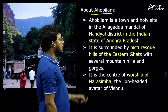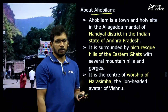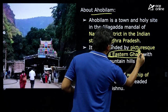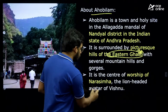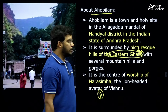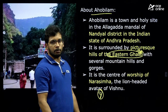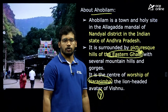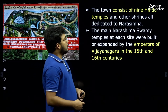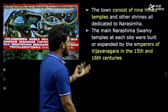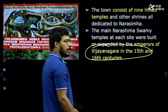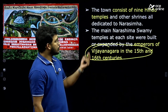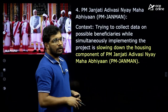Chenchu tribes are also part of Particularly Vulnerable Tribes — their population is declining. Ahobilam is in Nandyal district of Andhra Pradesh, located in the Eastern Ghats. There are nine groups of temples built mainly by the Vijayanagara kings who ruled Andhra, Telangana, and parts of Karnataka, and some temples were built even earlier by the Eastern Chalukyas. Ahobilam is a worshipping place of Narasimha, a Vishnu avatar.